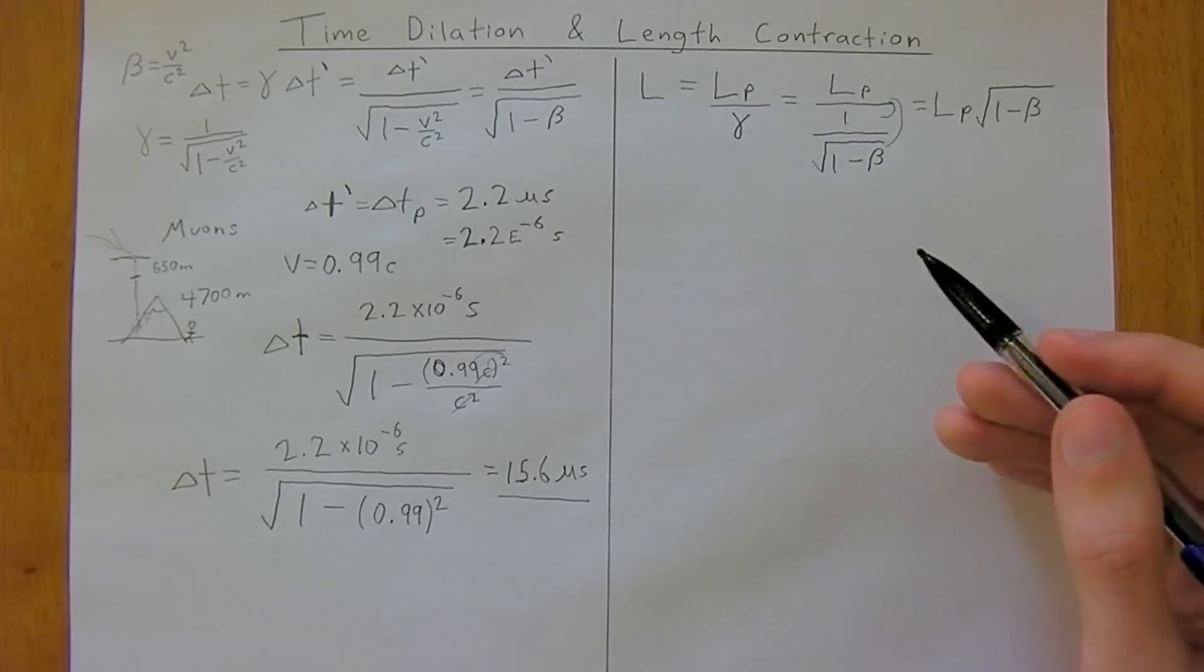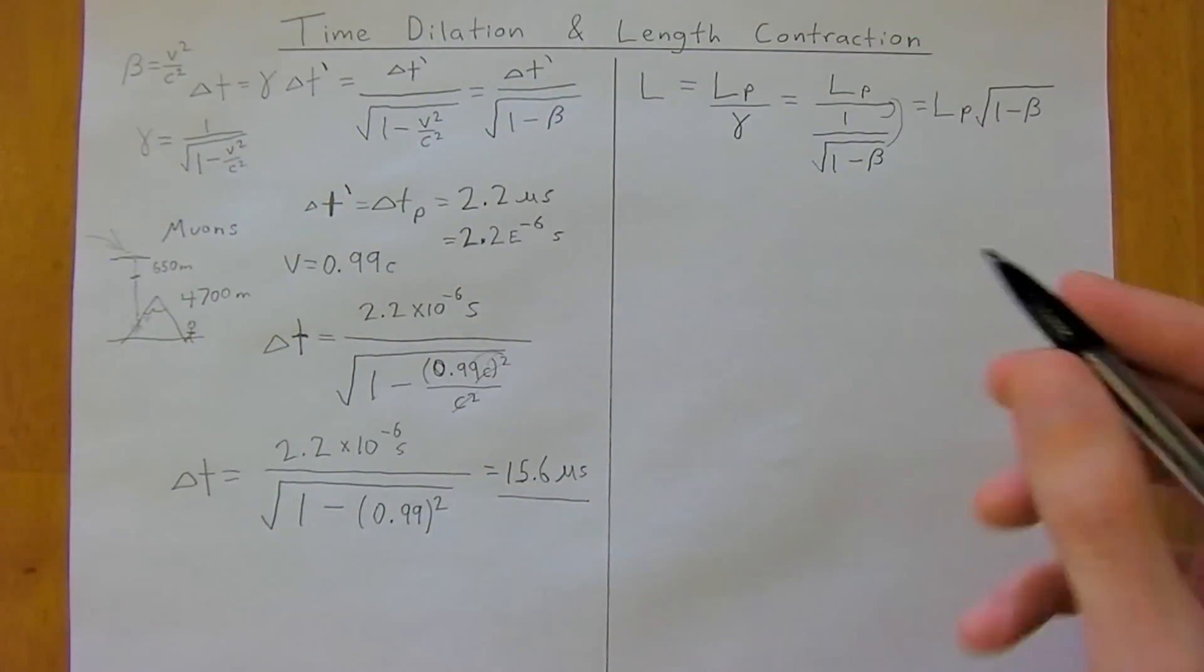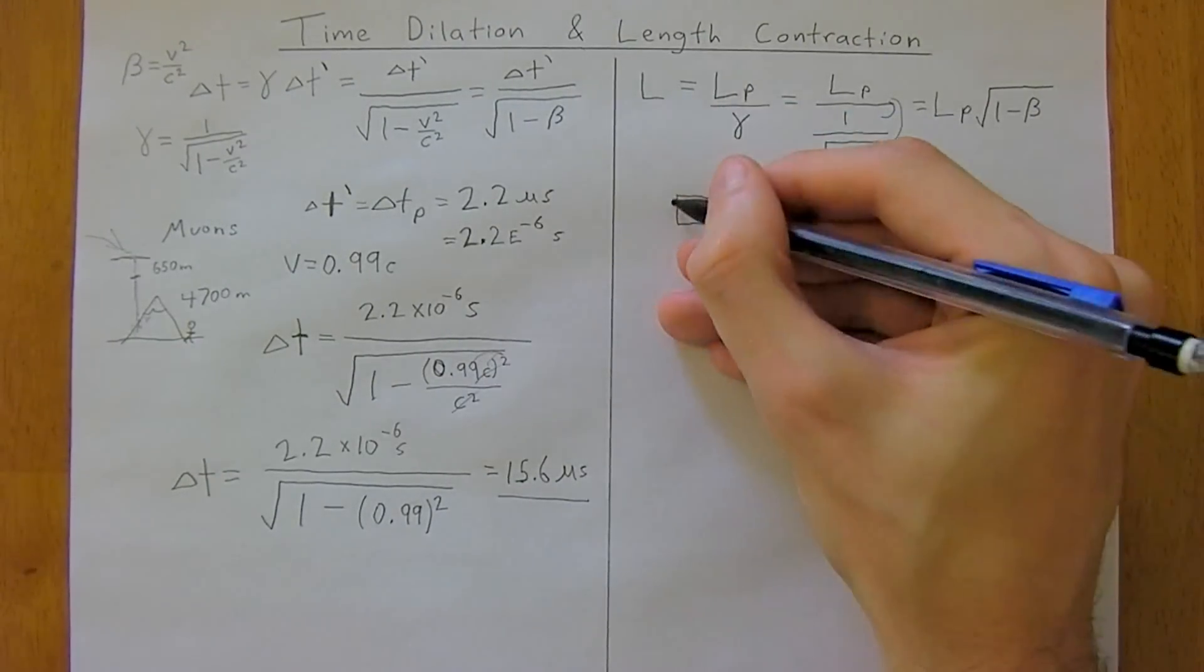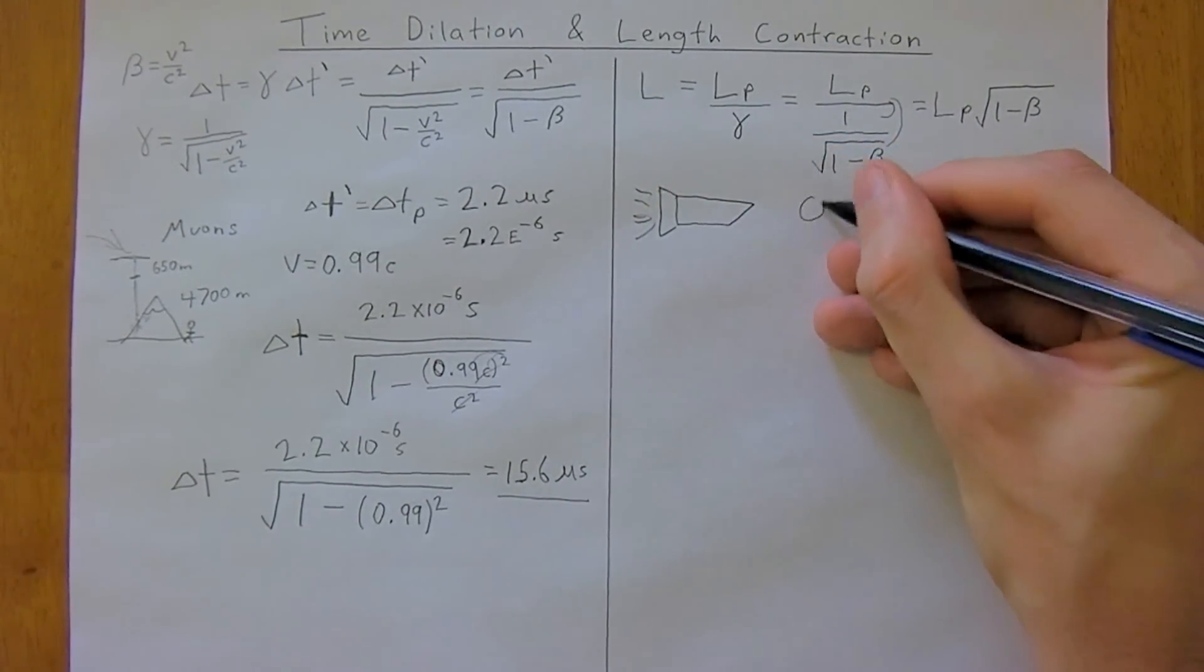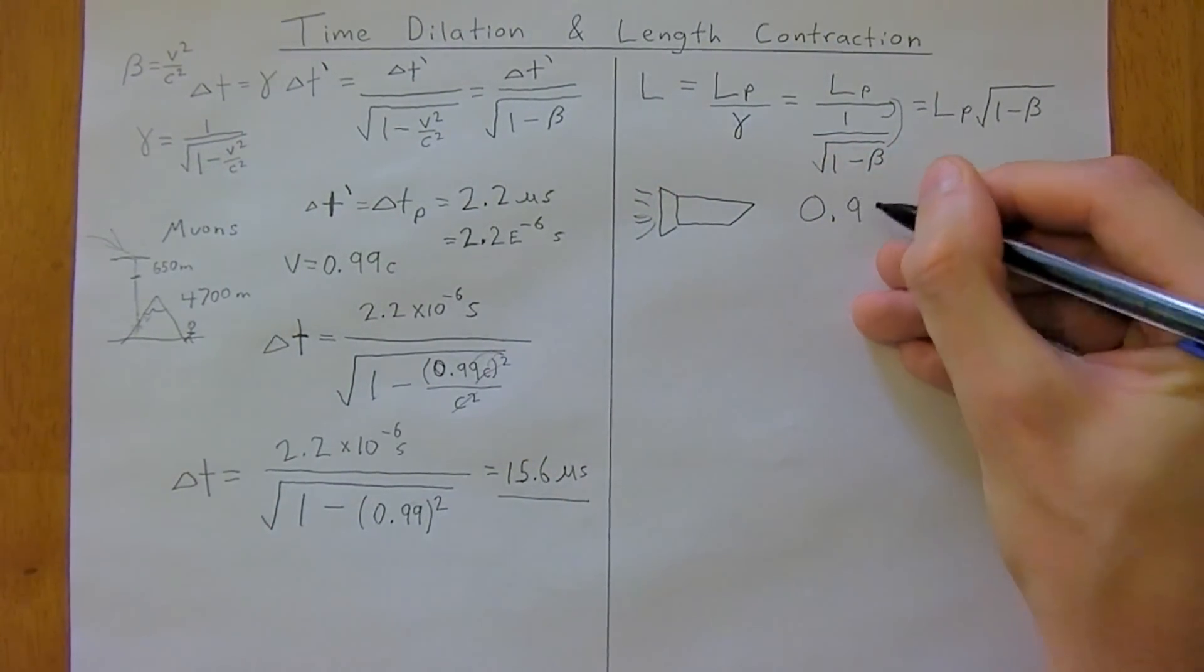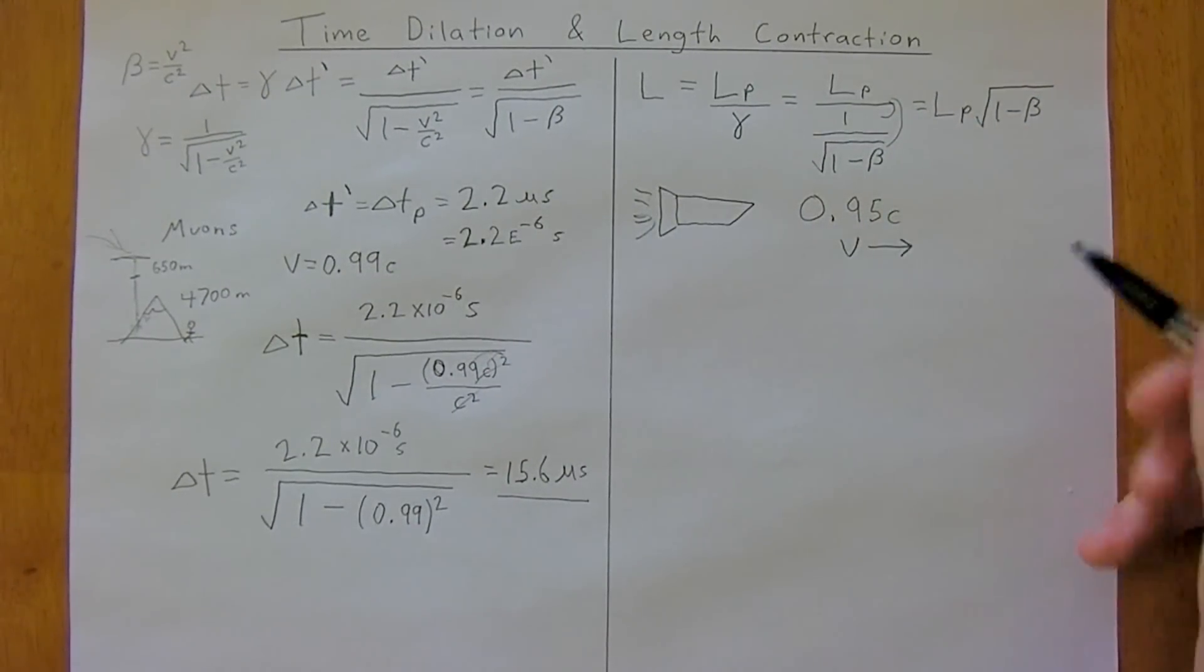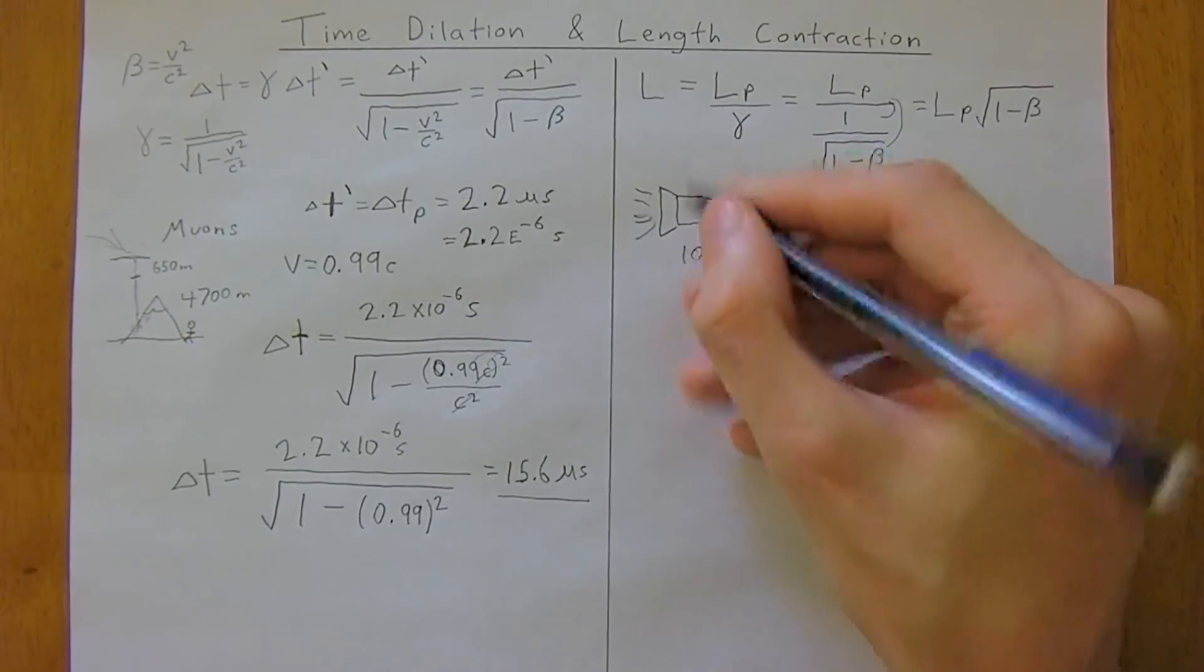And so, we can do the same thing now, working with length contraction. So, say you had a spaceship, this is a pretty basic spaceship here, going to the right, at a velocity of 0.95c, headed to the right, and it was 100 meters long.